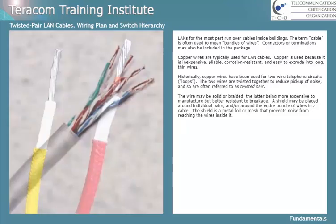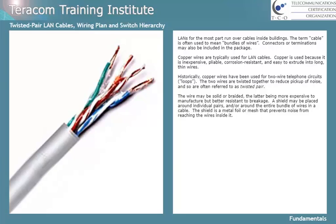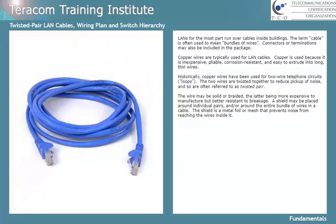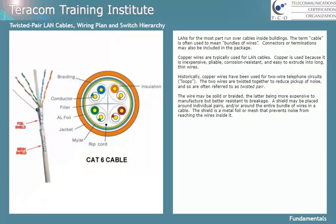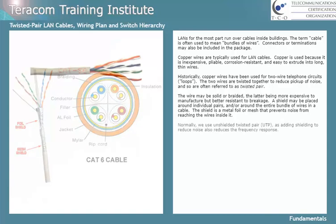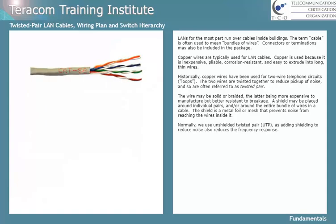Often the wire inside the walls is solid and the wire in patch cords is braided. A shield may be placed around individual pairs and/or around the entire bundle of wires in a cable. The shield is a metal foil or mesh that prevents noise from reaching the wires inside it. Normally we use unshielded twisted pair because adding shielding to reduce noise also reduces the frequency response of the cable and thus the ability to signal over it.